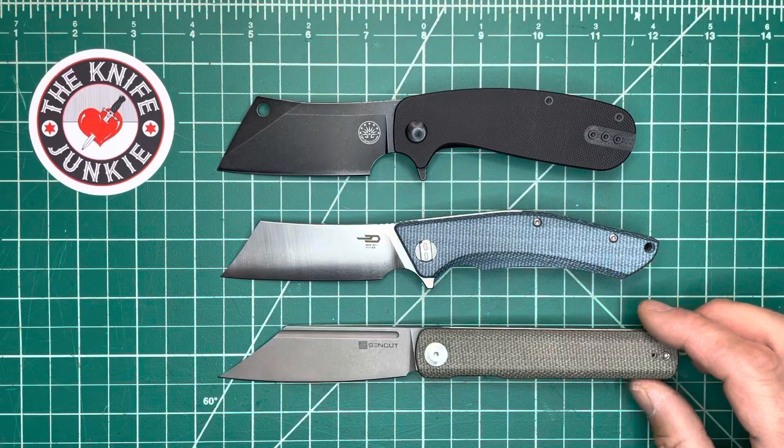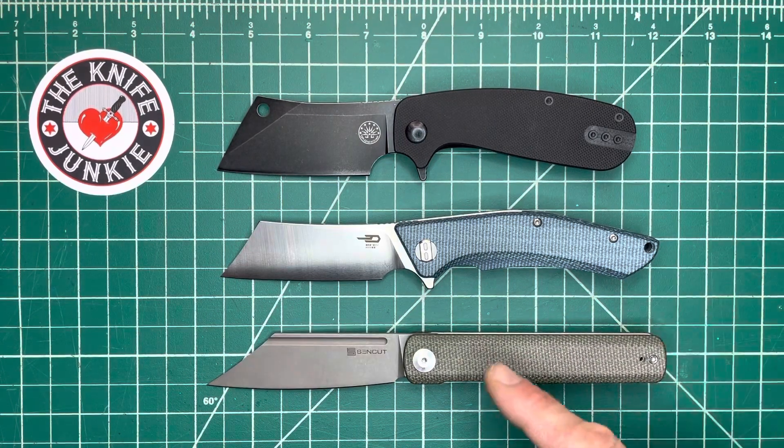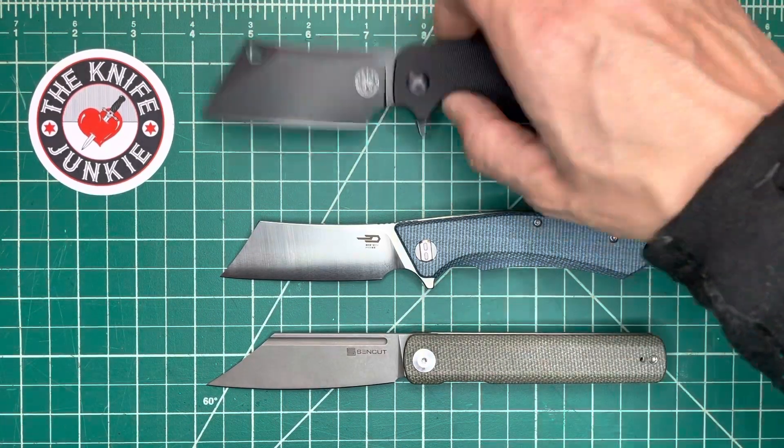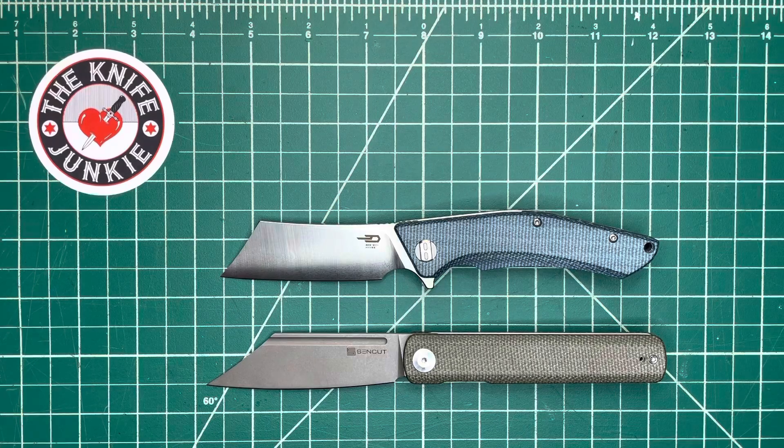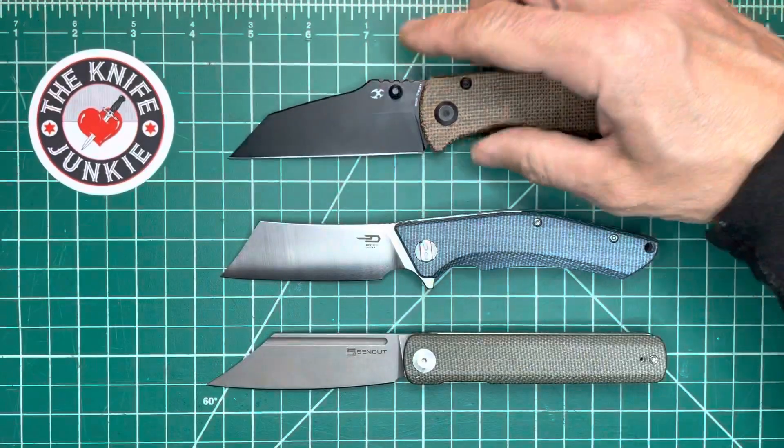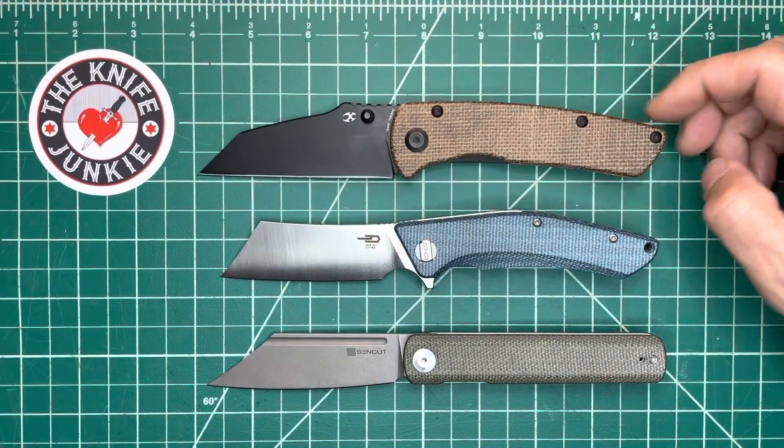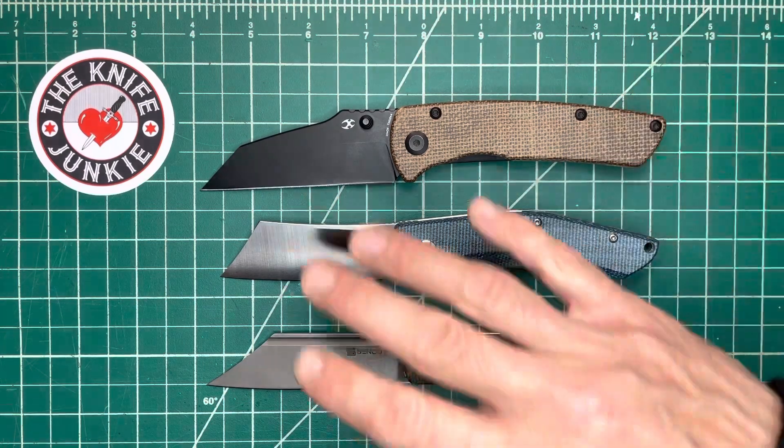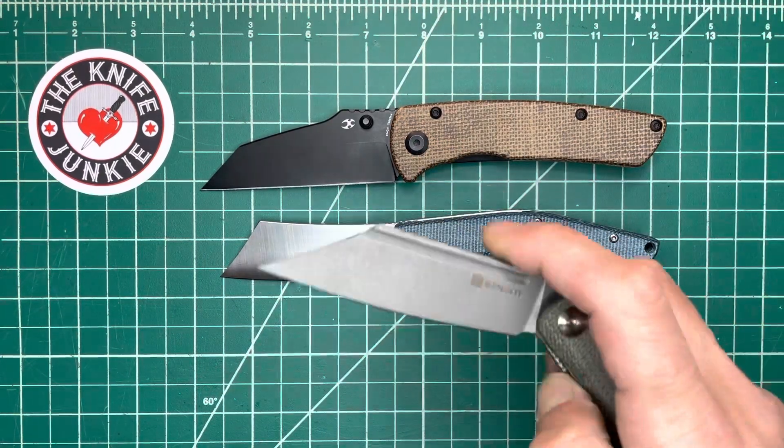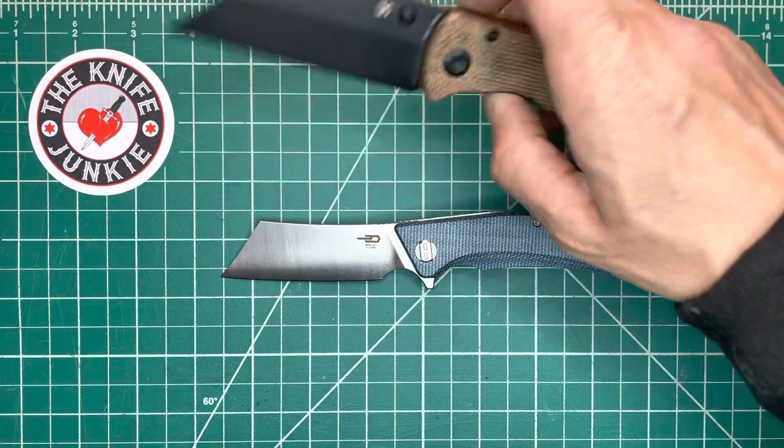Here it is with the Sen Cut. What is this? The Bronte. Bronte. And then, the Main Street Mini. Bigger, bigger knife. But, kind of, these all sort of fill a similar utility purpose to me.